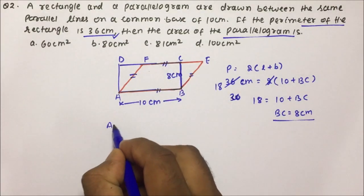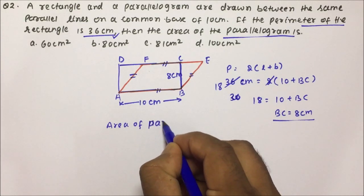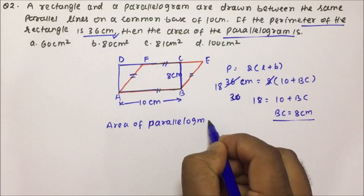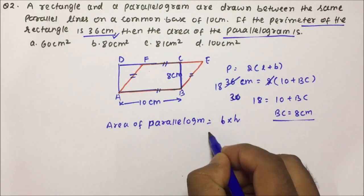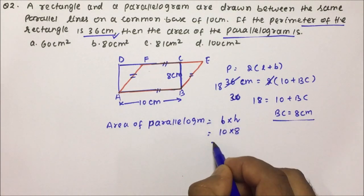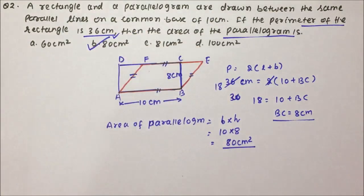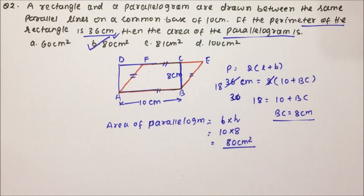The area of the parallelogram equals base × height. The base is 10 and the height is 8 — since both shapes share the same parallel lines, the height is the same as the rectangle's breadth. So the area = 10 × 8 = 80 centimeters square, and option B, 80 cm², is the correct answer for question number 2. Today we learned about parallelogram, a very important topic in mensuration. Thanks a lot for watching the video.